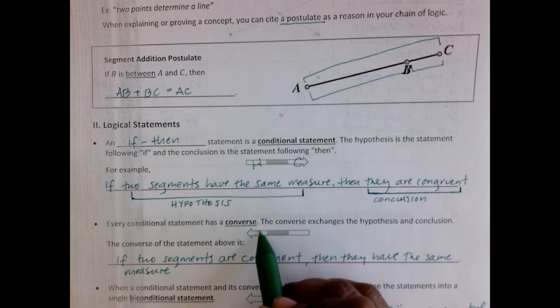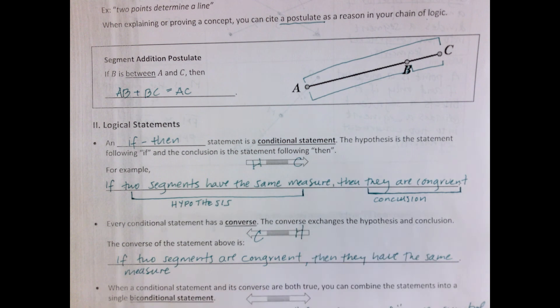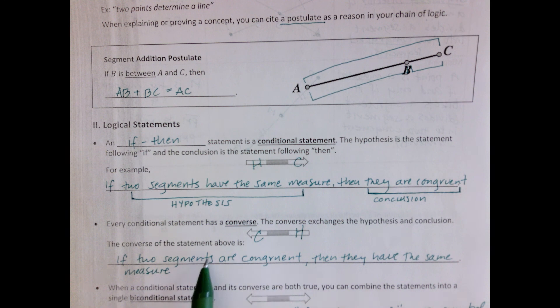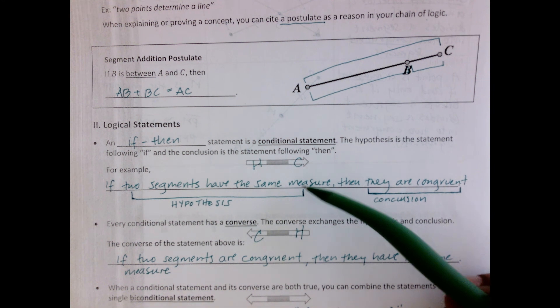So your conclusion is here, and your hypothesis is here. So if two segments are congruent, then they have the same measure. So we started off with the conclusion. If two segments are congruent, then they have the same measure. That's called the converse. So the converse of any conditional statement is going to be that conditional statement backwards.